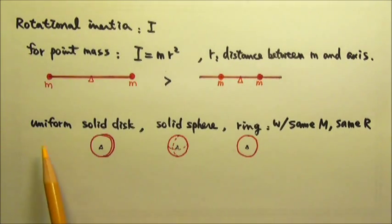How about these? Uniform solid disk, solid sphere, and ring, all with the same mass m and the same radius. Please rank them by their rotational inertia high to low if their rotational axis are perpendicular to the page and through their center of mass.